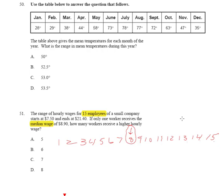Okay, we're nearing the end, thank goodness, and we are looking at questions 50 and 51. Look at what we're given - a data table with January through December with a bunch of temperatures in it. So let's read the question. It says the table above gives the mean temperature for each month of the year. What is the range in mean temperature during the year?